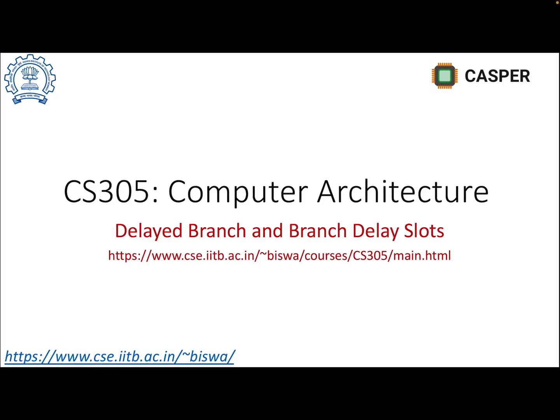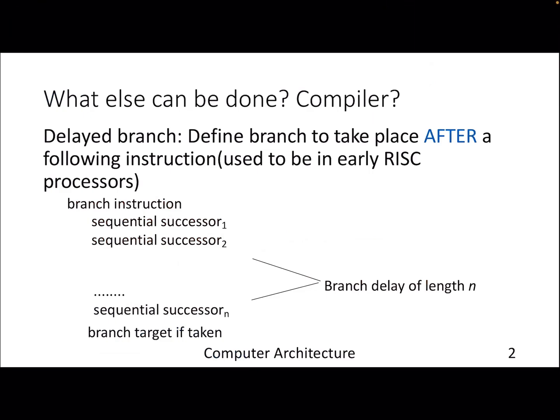Hello and welcome to this lecture where we will continue our discussion on control hazards and possible mitigation techniques. This lecture will talk about a technique called delayed branch and the notion of branch delay slots. In the last lecture we discussed various techniques to mitigate stalls, ending up with speculation and then killing or flushing instructions in the pipeline. But that still introduces delays — whether we assume the branch won't be taken or will be taken, it doesn't always provide good performance.